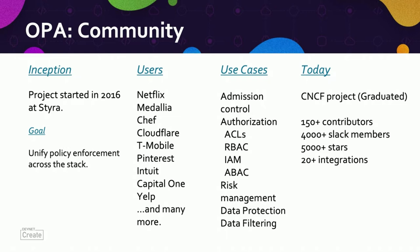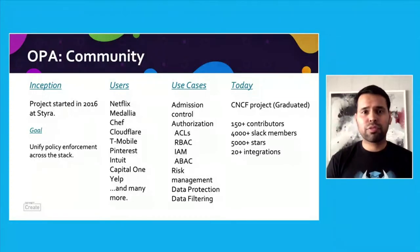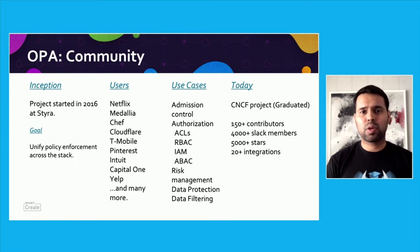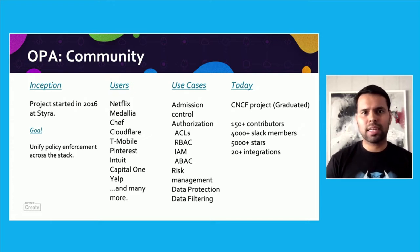Companies like Chef, Medallia, Capital One, Yelp, and many more are using OPA in production for a variety of use cases such as RBAC, ABAC, admission control, data protection, and so on. For those of you who follow the CNCF, OPA is a graduated project with more than 150 contributors on GitHub. It has a Slack community of more than 4,000 members, has been starred more than 5,000 times on GitHub, and is integrated with more than 20 of the most famous open source projects out there.